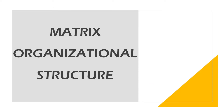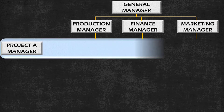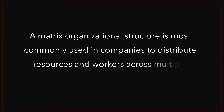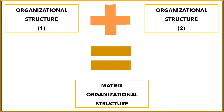A Matrix Organizational Structure is a workplace format in which employees report to two or more managers rather than one manager overseeing every aspect of a project. It is most commonly used in companies to distribute resources and workers across multiple organizations. A Matrix Structure is a combination of two or more types of organizational structures, arranging your business so that you set up reporting relationships as a grid or matrix rather than in the traditional hierarchy.